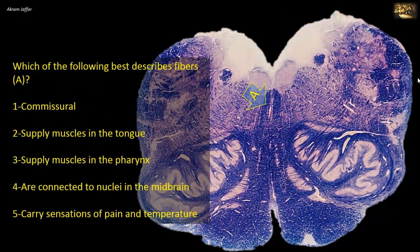Which of the following best describes the fibers in A? This is a section of the open part of the medulla — the upper part — note the crumpled back shape of the large principal olivary nucleus that characterizes the upper medulla. A is a nerve fasciculus that is longitudinally oriented and adjacent to the midline, located most posteriorly in relation to the medial lemniscus and tectospinal fibers. Thus A is the medial longitudinal fasciculus.